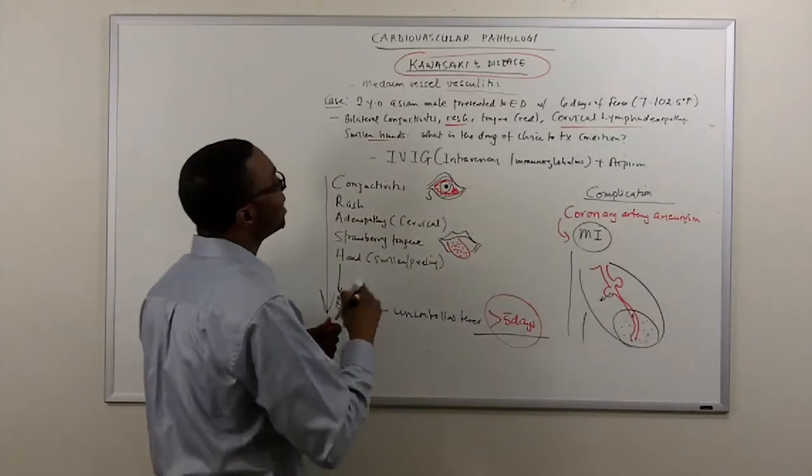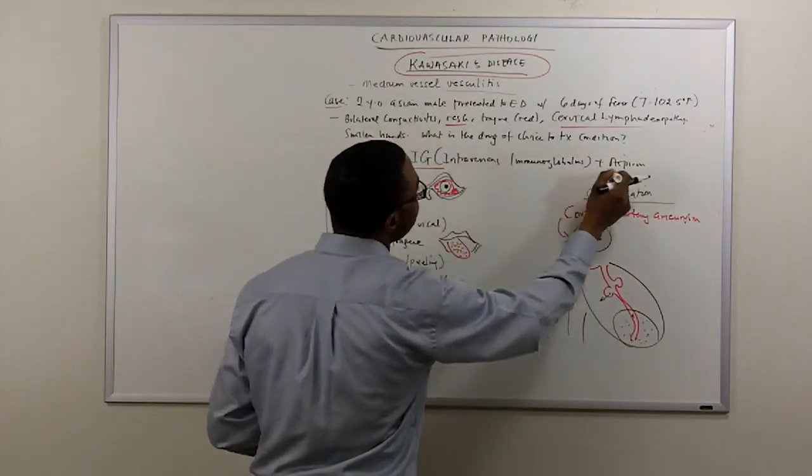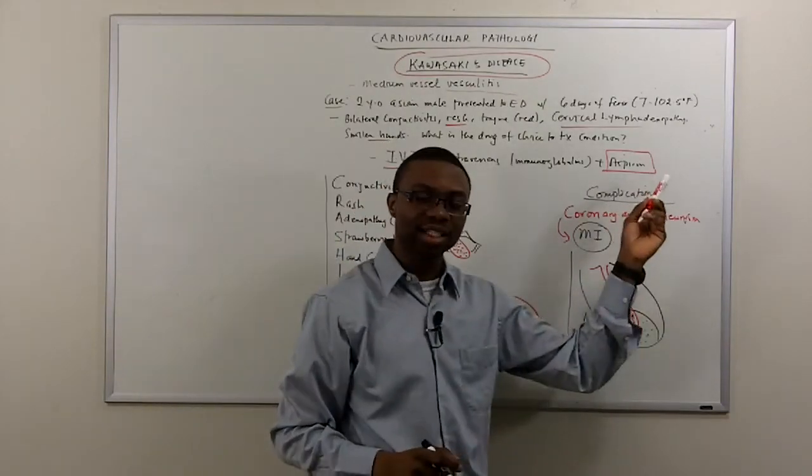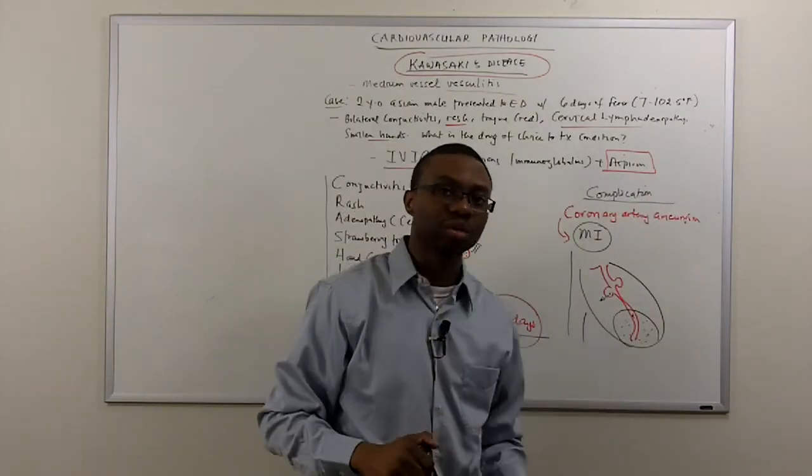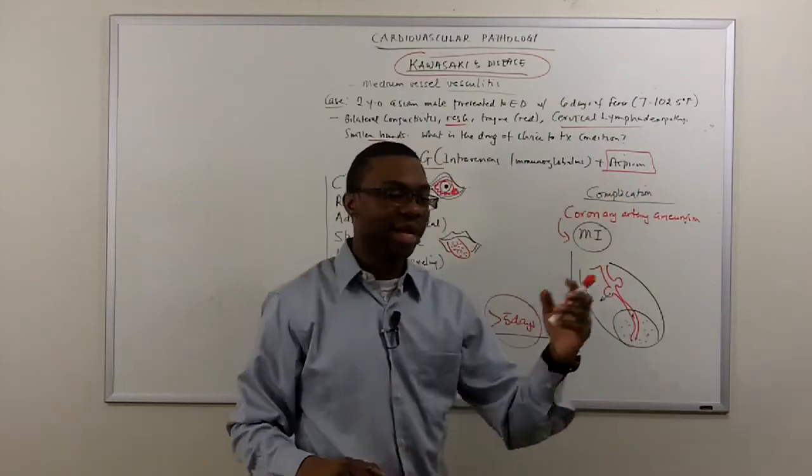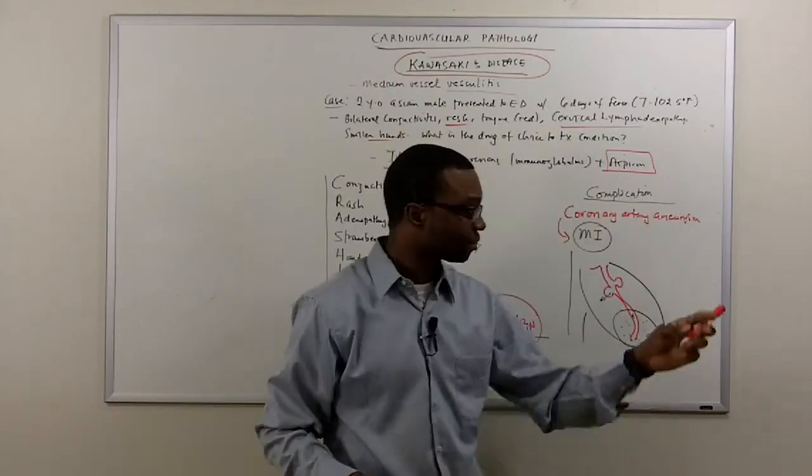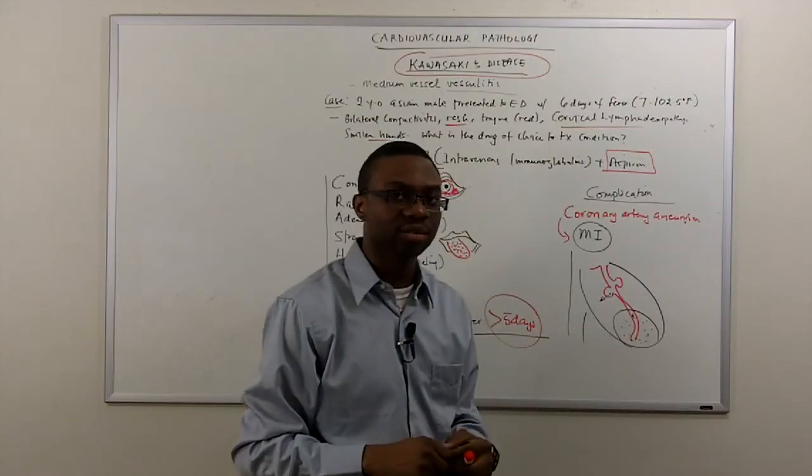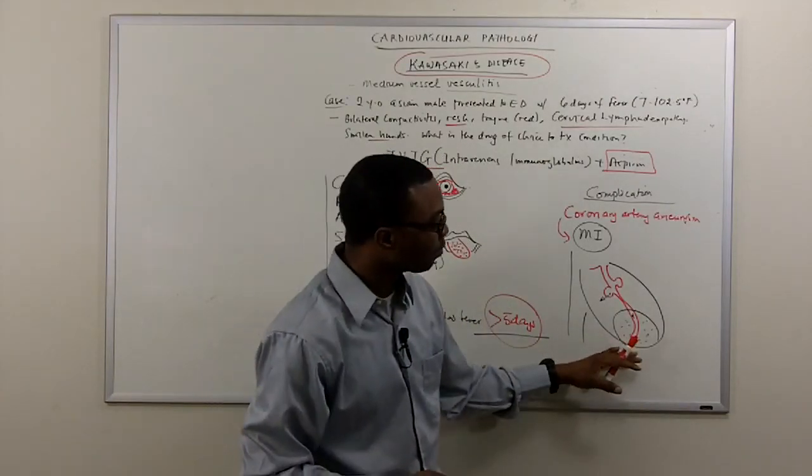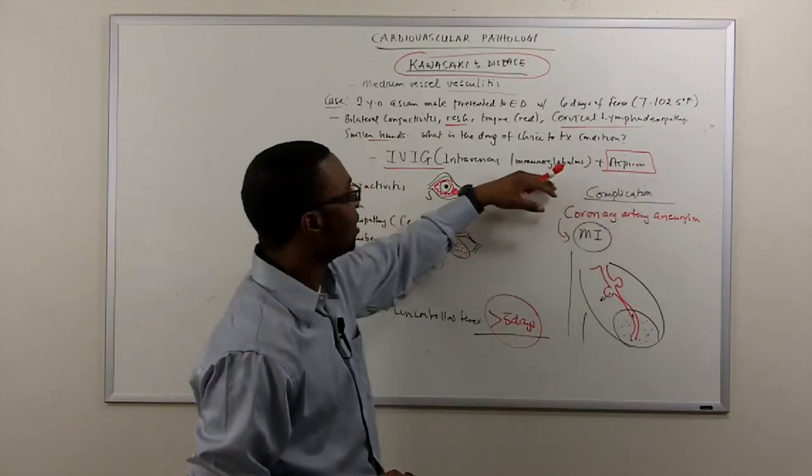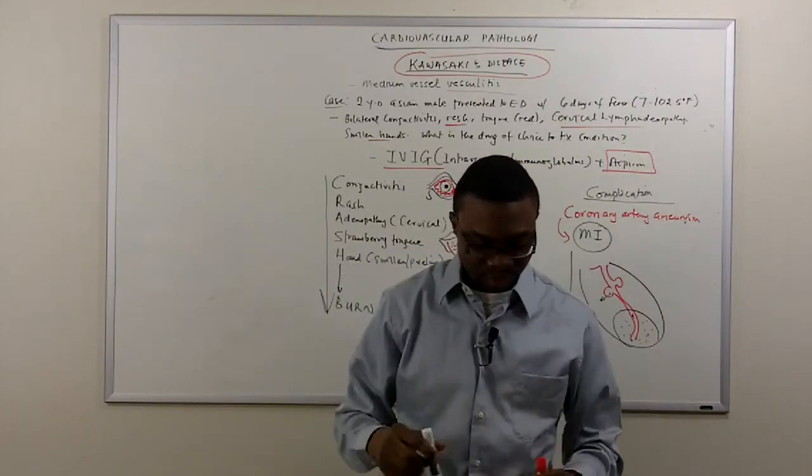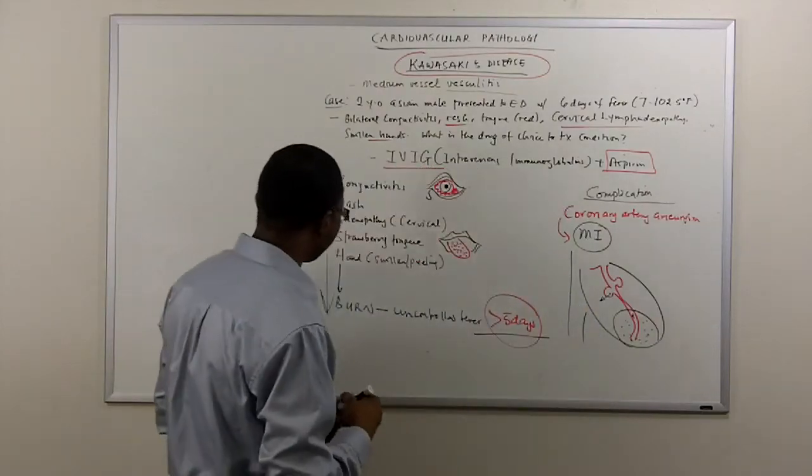So you want to treat them immediately with IVIG and aspirin. And aspirin is an antithrombotic agent. It prevents them from getting coronary artery thrombosis by inhibiting platelets from adhering to each other. That's very important. That's why we give them aspirin and give them intravenous immune globulins.